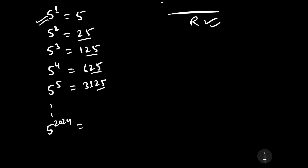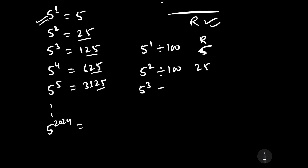When we divide 5 to the power 1 by 100, it gives remainder 5. When we divide 5 to the power 2 by 100, it gives remainder 25. When we divide 5 to the power 3 by 100, it gives remainder 25. When we divide 5 to the power 4 by 100, it gives remainder 25.